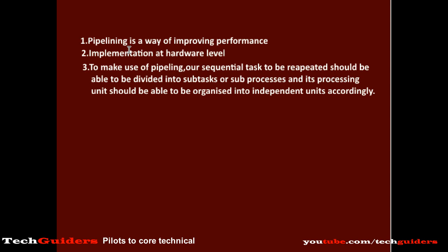Generally, pipelining is a way of improving the performance and it is an implementation at the hardware level. To make use of pipelining, our sequential process to be repeated should be able to be divided into sub-processes, and its processing unit should also be able to be organized into independent units accordingly.